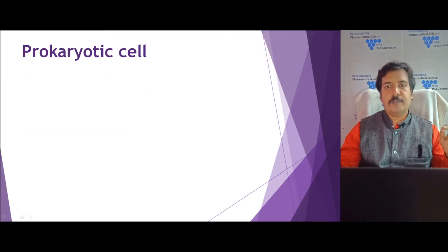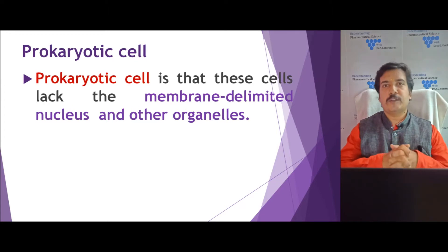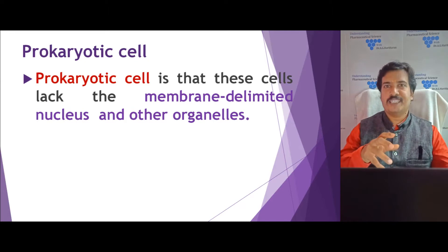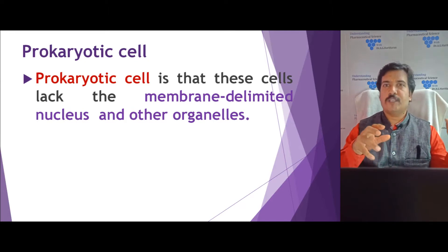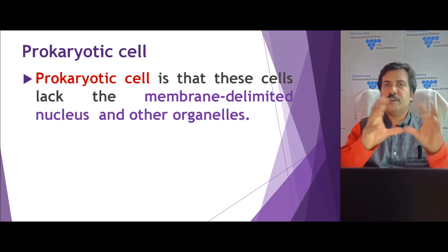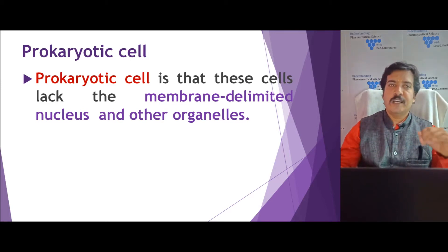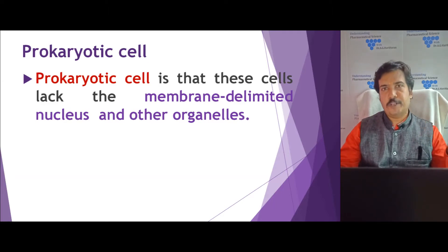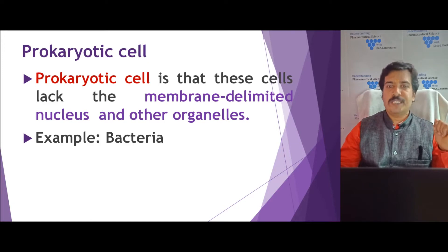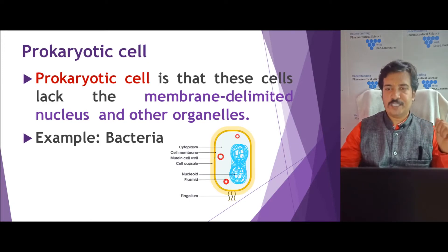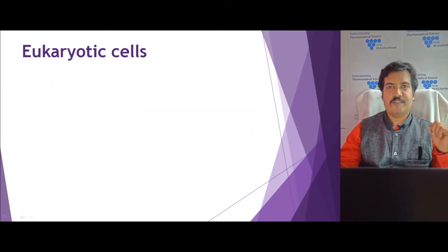Generally, the prokaryotic cell lacks membrane-enclosed organelles as we can see in eukaryotes. That means it does not have a mitochondria-like structure or a chloroplast-like structure. That is why we call it a primitive nucleoid-like structure. The best example is bacteria. As you can see from the picture, the cytoplasm is present and the DNA is concentrated at a particular location in the cytoplasm itself.